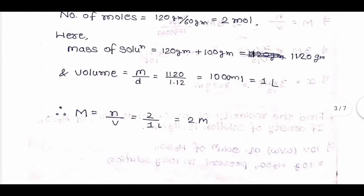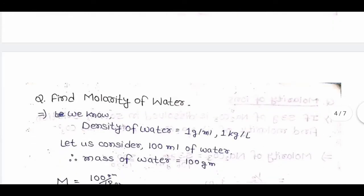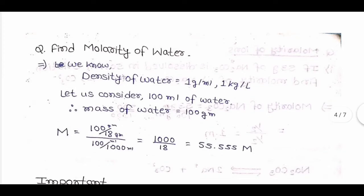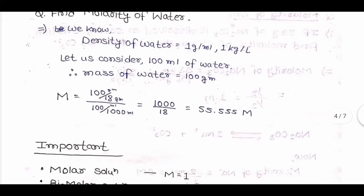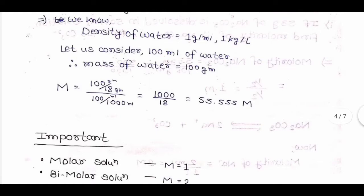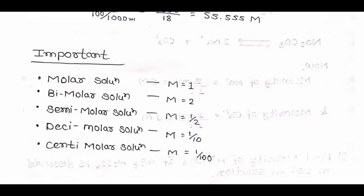Next question: find the molarity of water. We know density of water = 1 g/mL. Consider 1000 mL of water; mass = 1000 g. Molarity = (1000/18) / (1000/1000) = 1000/18 = 55.55 M.